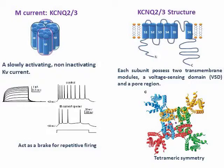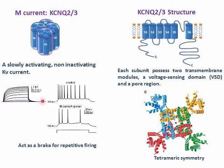KCNQ channels comprise a subfamily of voltage-gated potassium channels. In the brain, the KCNQ2 subunit coassembles with KCNQ3 to generate the M-current, a slowly activating potassium current.